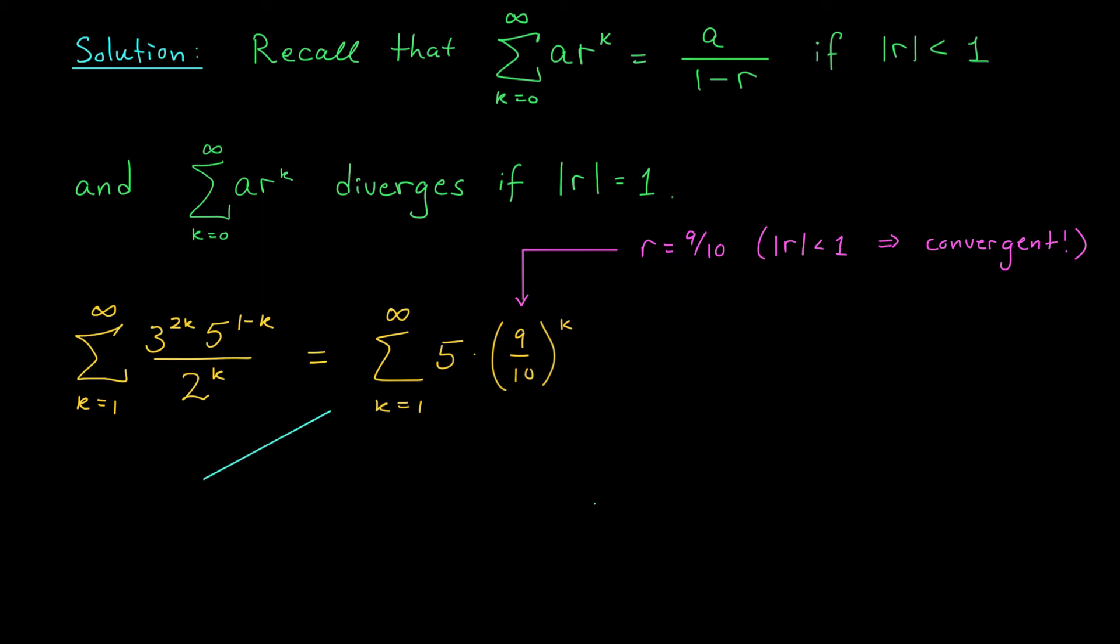So I could add in 5 and subtract 5 to get something like this. Minus 5 plus the sum from 0 to infinity of 5 times 9 tenths to the k. Now, I really could use my formula here. I just have to remember to subtract 5. Now,